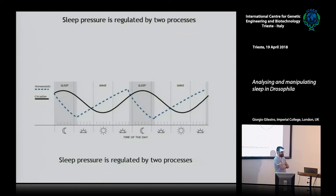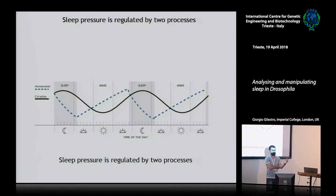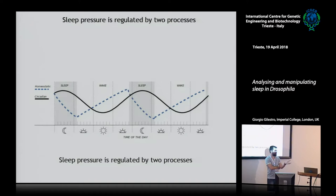In mammals, homeostasis manifests not so much in terms of sleep length, but rather in terms of sleep depth, which we can measure using electrophysiological correlates. In flies, we know it exists because we observe it as a rebound: we sleep-deprive animals, and then the day after they sleep longer. It's not necessarily that they recover all the sleep loss — similarly to what happens in mammals, if you sleep-deprive a fly for 12 hours, they'll only recover maybe 60–70 minutes. But it's possible those 70 minutes condense all the sleep depth lost within those 12 hours.